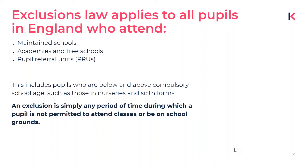Exclusions have also been related to gang grooming and knife crime. So as governors, it's your job to make sure that you provide a check on this system to ensure that exclusions that do happen are fair and appropriate. The exclusions law we're going to discuss today applies to all pupils in England who attend maintained schools, academies, free schools, and pupil referral units, including pupils above and below compulsory school age.